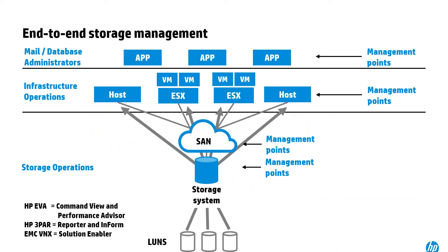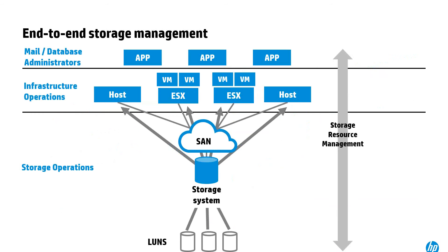Every single layer of abstraction — whether at the host, virtualization of host, storage, or provisioning on storage — creates scope for storage to be misconfigured or lost. But it is possible to manage that infrastructure complexity.